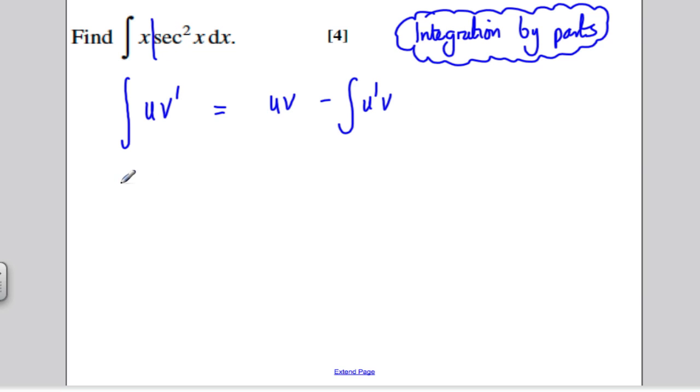Lay out your question neatly. Let's let u be x because it's something we can easily differentiate. Let's let our v dashed be sec squared because it's something we can easily integrate. So, lay out as follows. u is equal to x, and then when we do that, u dashed or the differential of that would simply be 1.